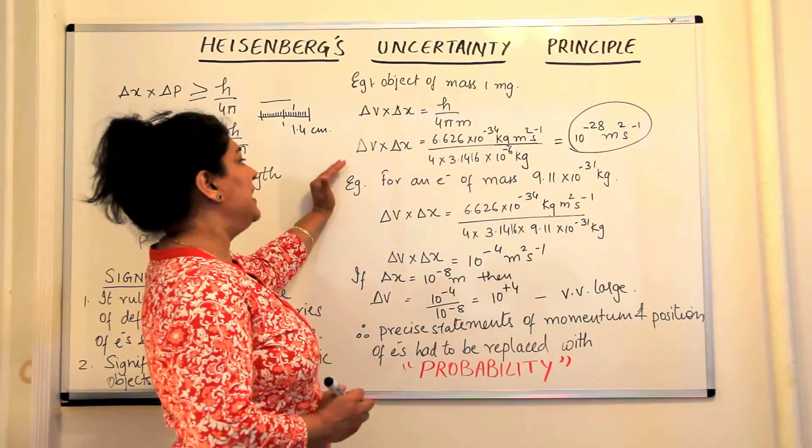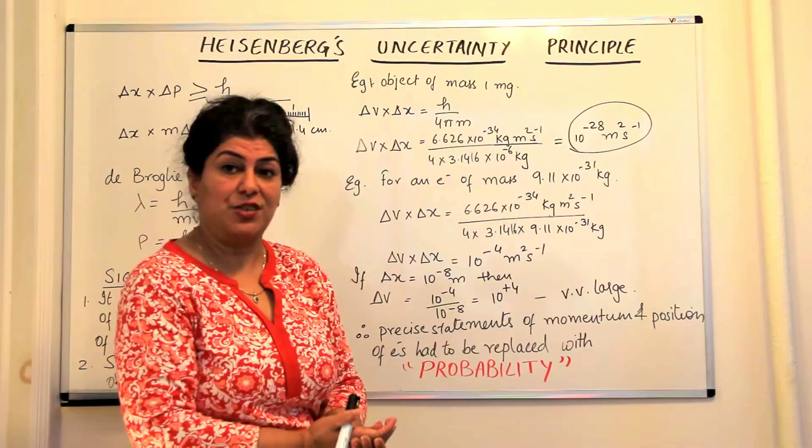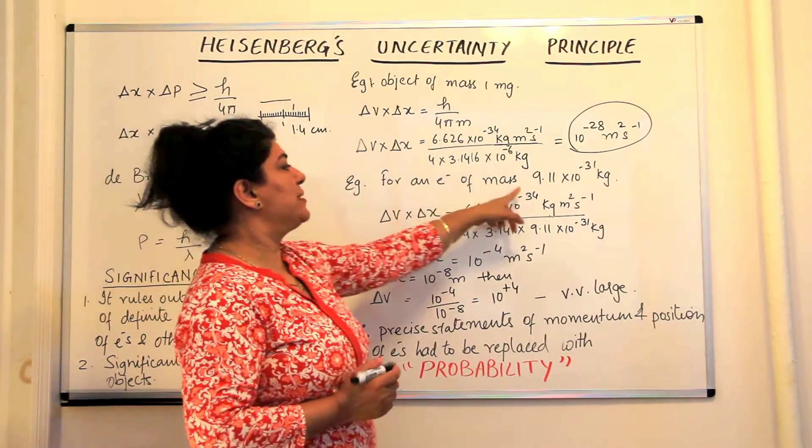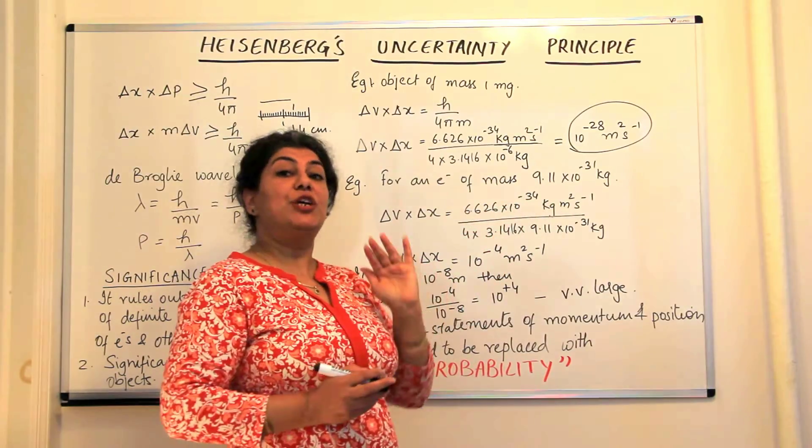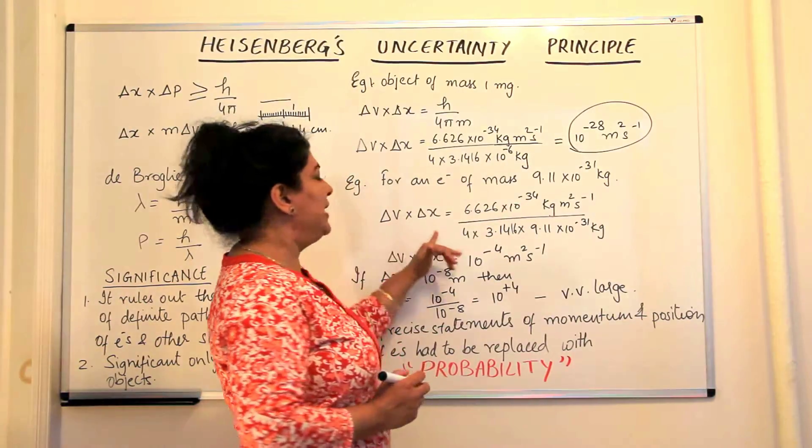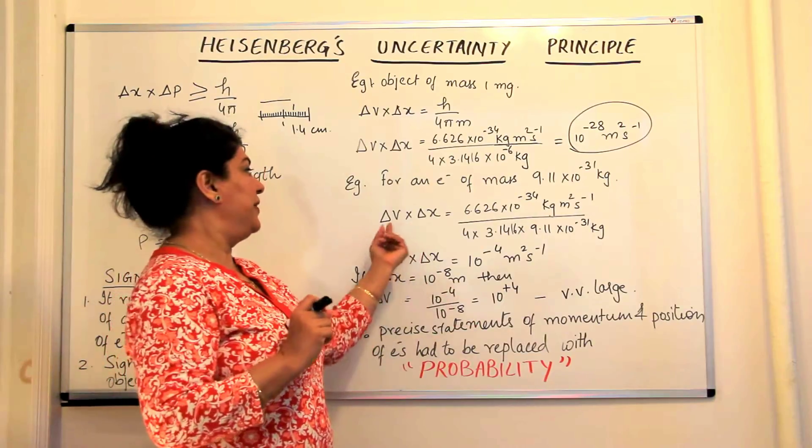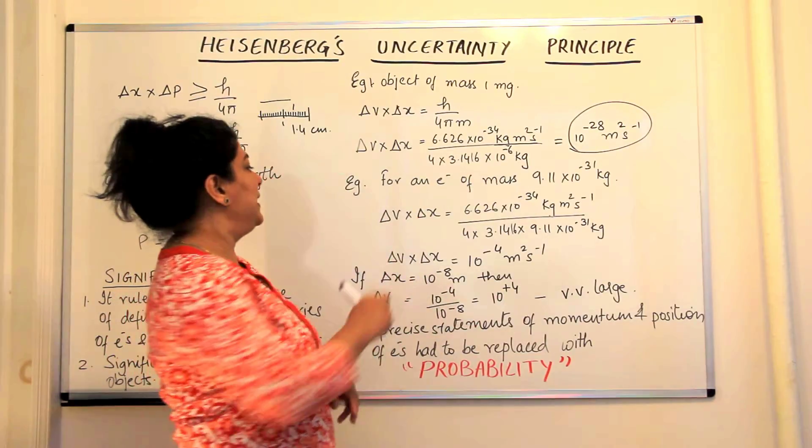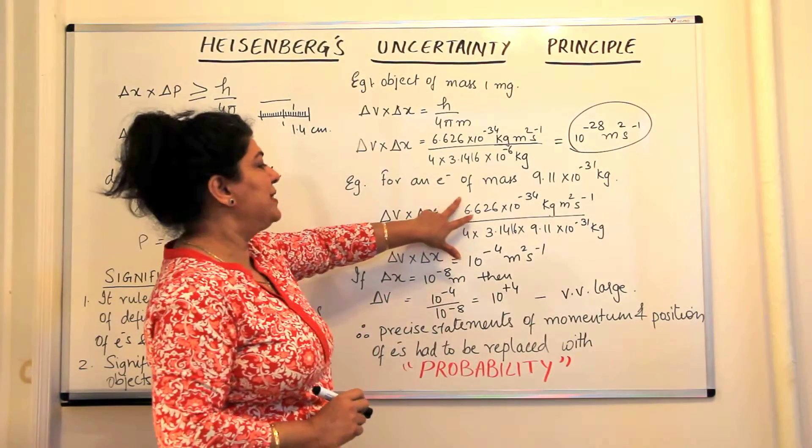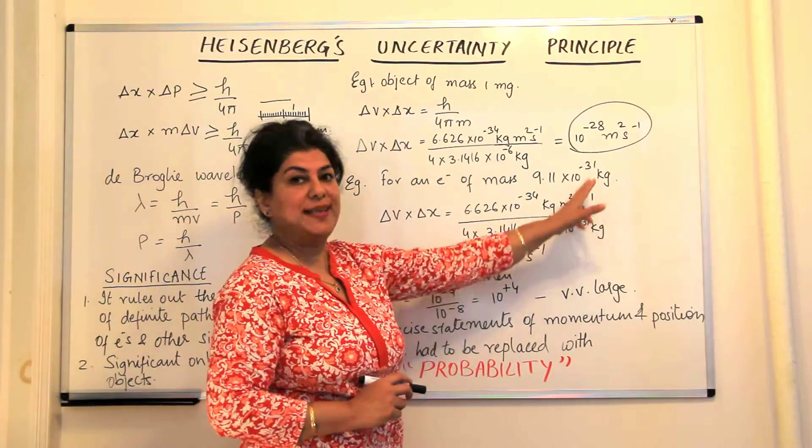Now, if we take an electron and apply Heisenberg's Uncertainty Principle to it, we observe that for an electron which has a mass of 9.11 times 10 to the power minus 31 kg, when the mass is so small and we find the product between the error in velocity and the error in position, we find that this product equals 6.626 times 10 to the power minus 34, which is Planck's constant in kg meter square second inverse,